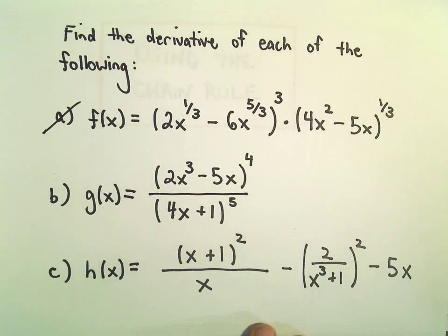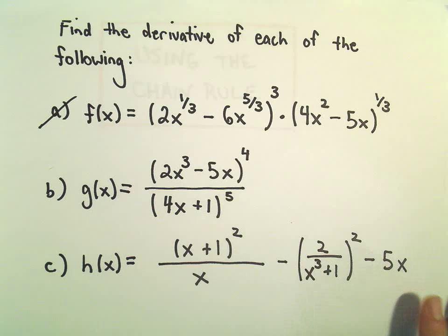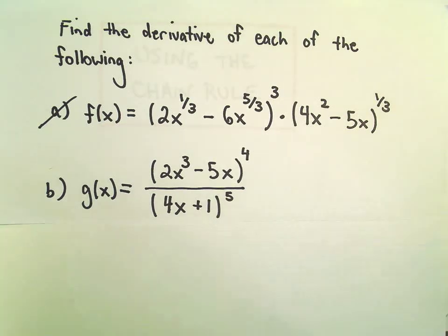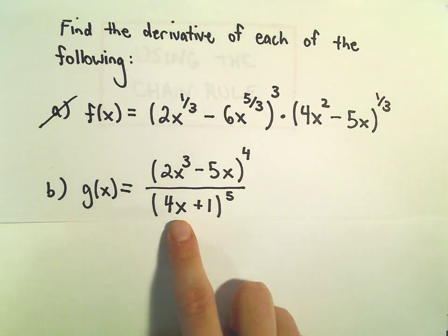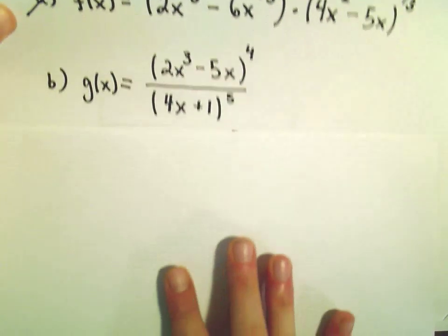So here we're going to look at another derivative problem using the chain rule. We're going to find the derivative of 2x cubed minus 5x to the 4th over 4x plus 1 to the 5th.